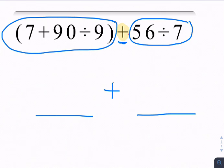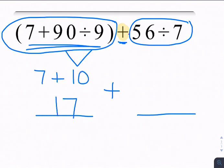So inside this first term, I have 7 plus 90 divided by 9. According to order of operations, division comes before addition. So I need to do this 90 divided by 9 first. And that would be 10. So then it would really be 7 plus 10, which is 17.